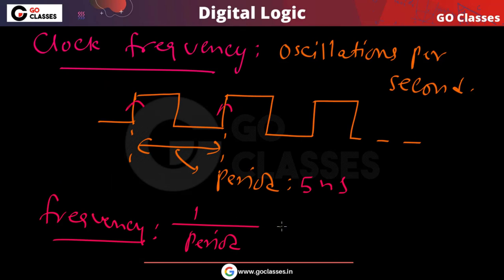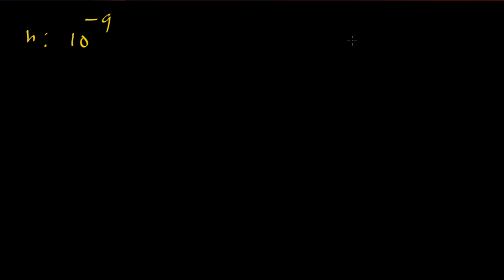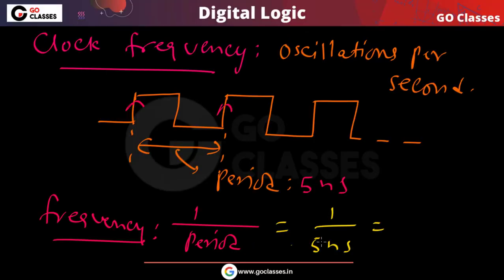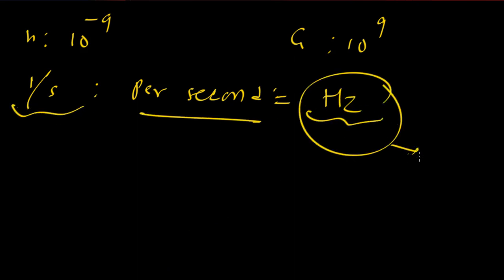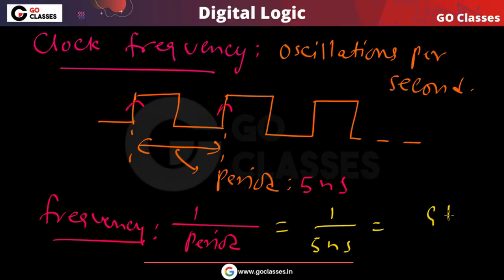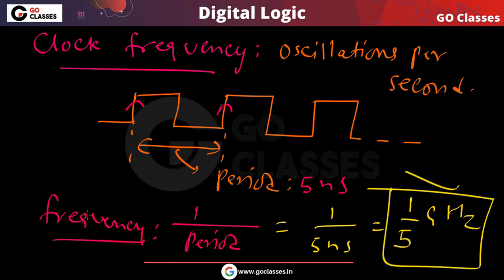Frequency equals 1 divided by clock period. So for a period of 5 nanoseconds: nano means 10 to the power of minus 9, and 10 to the power of 9 means giga. So 1 divided by nanosecond gives giga, and per second means hertz. Therefore the frequency is 1 by 5 gigahertz. This is how you find the frequency: frequency equals 1 divided by clock period.